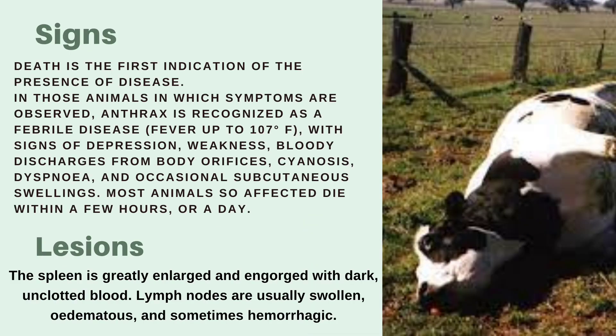Talking about the signs, death is the first indication of anthrax disease because the pathogenesis is so quick that it leaves no room for development of symptoms. In animals wherein symptoms are observed, anthrax is recognized as a febrile disease — meaning the animal shows fever up to 107 degrees Fahrenheit. It is also accompanied with depression, weakness, bloody discharges from body orifices, cyanosis, dyspnea, and occasional subcutaneous swellings.